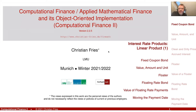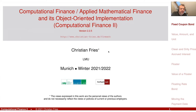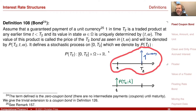Welcome back to Applied Mathematical Finance, where we are in a section discussing interest rates and interest rate products. What we did was we introduced a very fundamental, atomic interest rate product, which was our zero-coupon bond. This is just paying one unit of our currency at a fixed point in time, T2.